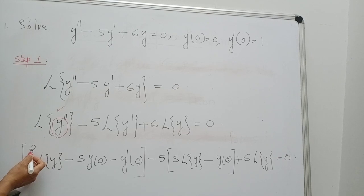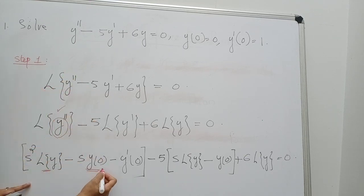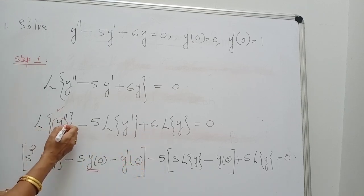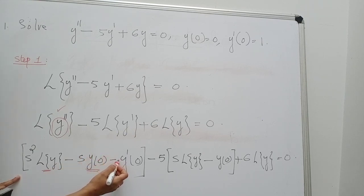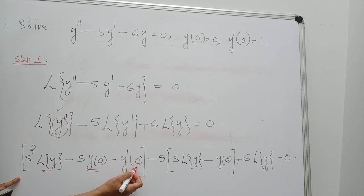For a second derivative, it starts with s² in descending powers. The first two terms are fixed in all derivatives: L{y} and y(0). Since our variable is y, we take y(0). The expansion of L{y''} is: s²·L{y} − s·y(0) − y'(0). If it is a double dash, the expansion ends with y'(0). Keep that in mind.